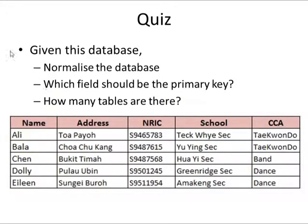So let's have a short quiz. Given this database, please try to normalize it — which means you try to break this database into smaller tables — and try to identify which field should be the primary key and how many tables it should be broken up into.